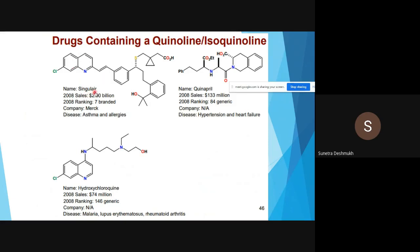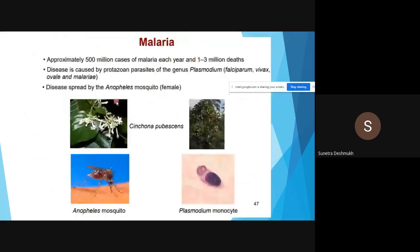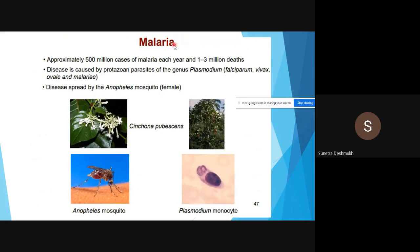Drugs which contain quinoline or isoquinoline: here we have quinoline moiety. The name is Singulair from Merck company, used for asthma and allergies. Then hydroxychloroquine for malaria, lupus erythematosus, and rheumatoid arthritis.